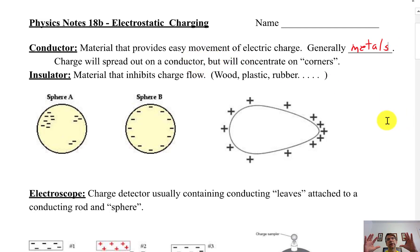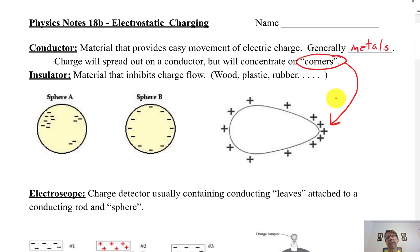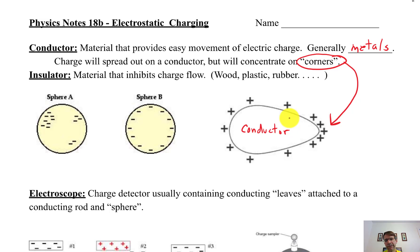The charge spreads out on the surface of the conductor, but it does concentrate at the corners. That illustration shows a metal conductor where charge spreads out symmetrically but gathers at the points. That's basically why lightning rods are pointed — so you can discharge from that point or attract charge to it. Things that are pointed can get rid of or gather charge more readily than rounded objects.